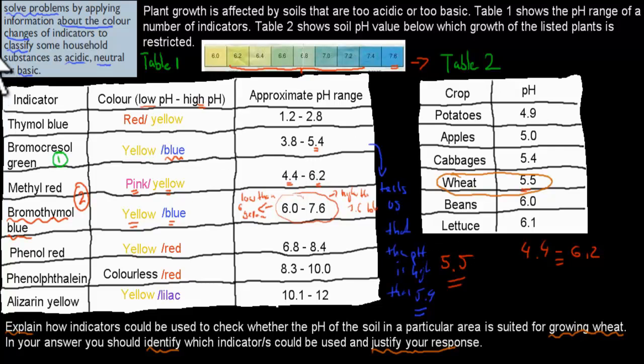Now we know because we first used the first one, Bromocresol Green. We figured out that it definitely has a pH of above 5.5. And we used that second one, and it falls in that range as well. That means it's going to be above 5.5, because that's what we figured out first, and somewhere between 5.5 and the other part of that range, which is 6.2.